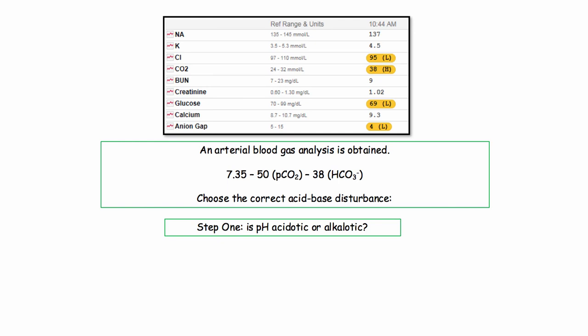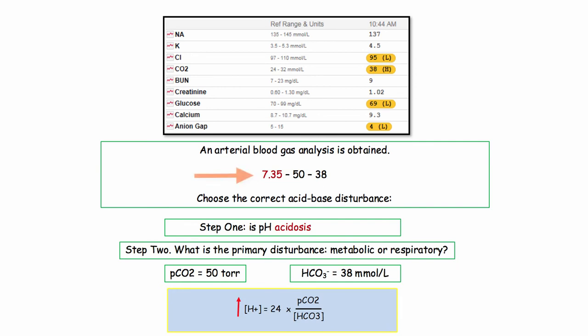Moving on, in this question, we take a quick shot at interpreting blood gases. So what is the first step? Determine the acid-base status. Is he acidotic or alkalotic? And we know from high school chemistry, the patient's pH of 7.35 is acidotic.